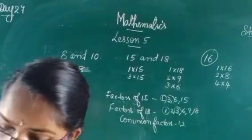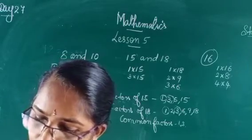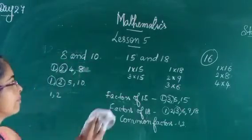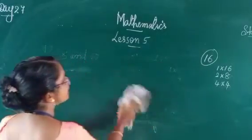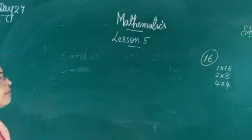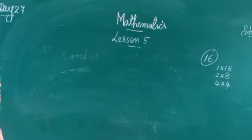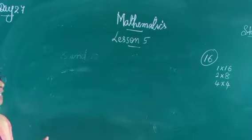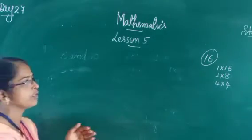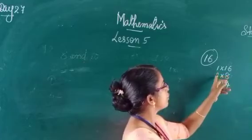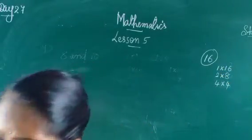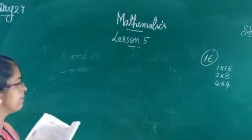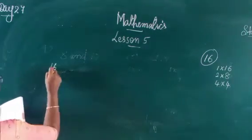Let's write the multiplication story of 16. 16 is 1 × 16, then 2 × 8, then 4 × 4, then 8 × 2, then 16 × 1. Can you write it? Are you ready? Let's do it.